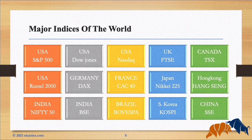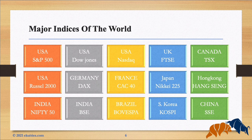Then we cross the Atlantic to the United Kingdom. They have the very famous FTSE — the Financial Times Stock Exchange 100 Index — an index of 100 companies listed on the London Stock Exchange, also market capitalization weighted. Next, we go to Canada for the TSX, or S&P TSX Composite Index, which is the benchmark Canadian index representing about 70% of the total market capitalization on the Toronto Stock Exchange, with about 250 companies listed.